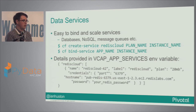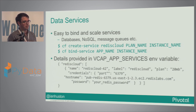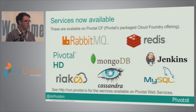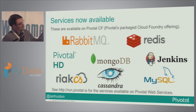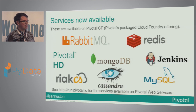You can do interesting things like having test and production data services — a test Redis service and a production Redis service with different data — and switch over between them very easily, because you don't need to change any code in your application. Here are some of the services available on Pivotal CF: Pivotal HD is a Hadoop distribution, plus Mongo, Cassandra, Redis, RabbitMQ, and even Jenkins is now available as a service. You can spin up Jenkins servers using Cloud Foundry and connect to them.